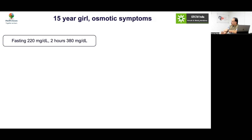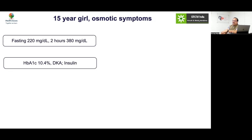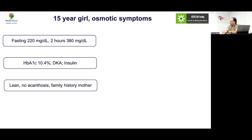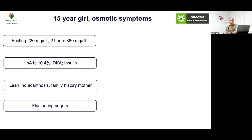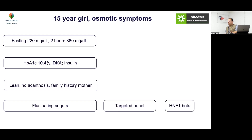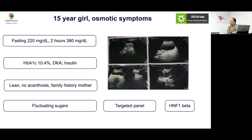Case 10: A 15-year-old girl with osmotic symptoms, fasting 220, 2-hour 380, HbA1c 10.4, DKA managed with insulin, lean, no acanthosis, family history in mother, and fluctuating sugars — sometimes off insulin for days, then developing hypoglycemia with insulin, then hyperglycemia. What is the diagnosis? Type 2 is unlikely. Targeted panel showed an HNF1-beta defect, and renal cysts were also present.